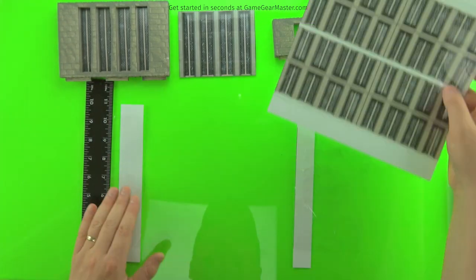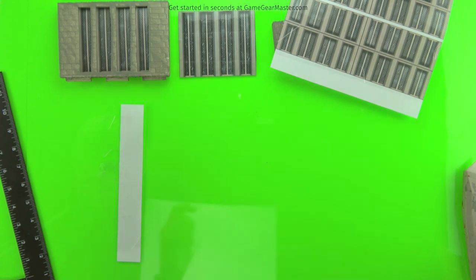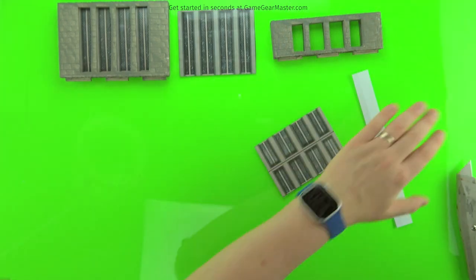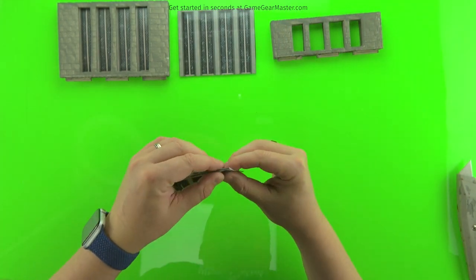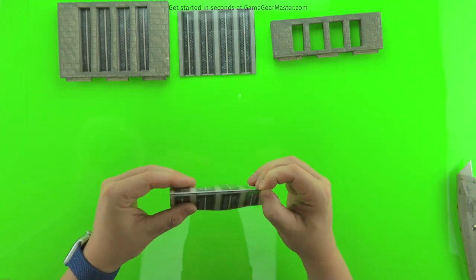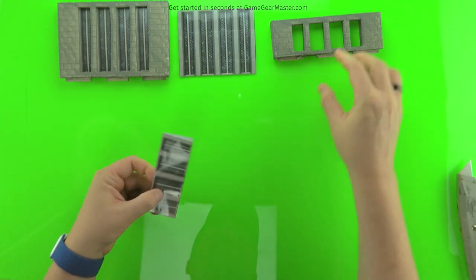And just cut it out. Fold it along that black line. And voila, just made another set of windows.